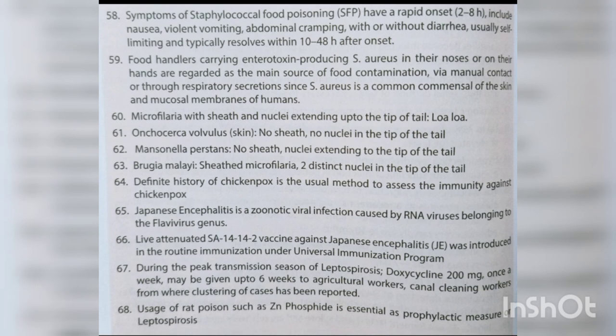Japanese encephalitis is a zoonotic viral infection caused by RNA viruses belonging to the Flavivirus genus. The live attenuated SA14-14-2 vaccine against Japanese encephalitis was introduced under the universal immunization program. During the peak transmission season of leptospirosis, doxycycline 200 mg once a week may be given for up to six weeks to agricultural and kennel cleaning workers from areas with clusters of cases. Usage of rat poison such as zinc phosphide is an essential prophylactic measure for leptospirosis.